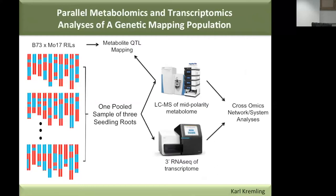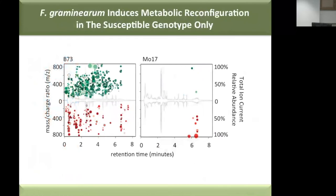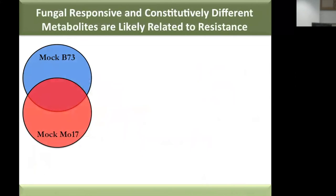The first story I want to tell is from comparing B73 and Mo17 — our two parental genotypes — with or without fungus inoculation. I'm showing cloud plots where each bubble represents a single mass feature the mass spectrometer can detect. In green are mass features significantly upregulated by Fusarium induction; in red are significantly reduced ones. The key take-home message is that a lot of bubbles appear in B73 but not so many in Mo17 — telling us that B73, the susceptible genotype, is significantly responding metabolically to Fusarium inoculation, whereas there's not much going on in Mo17's metabolome.